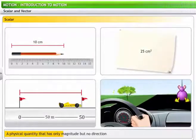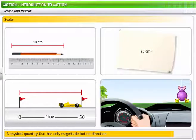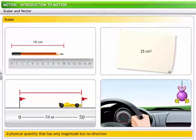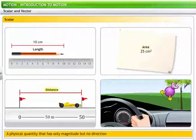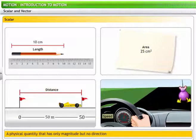A physical quantity that has only magnitude but no direction is scalar. Length, area, distance, and speed are all scalar quantities.